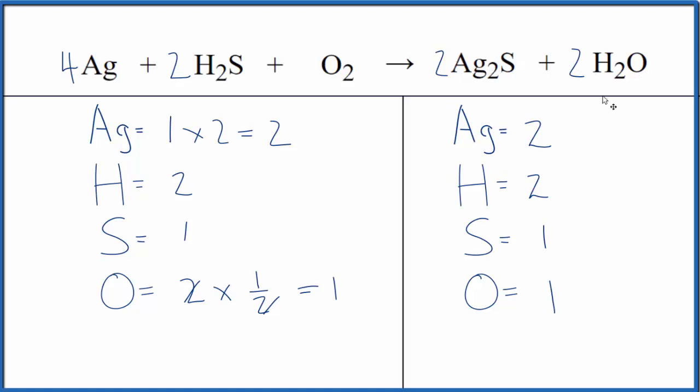You could have started off by putting a two in front of the H2O, trying to get the oxygens balanced. This is probably a little bit quicker. When you see oxygen, using fractional coefficients can be really useful, especially with combustion reactions.